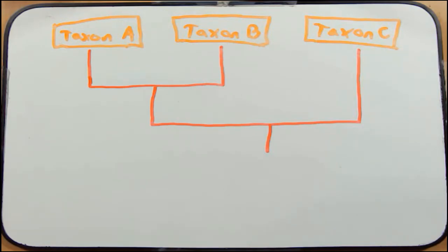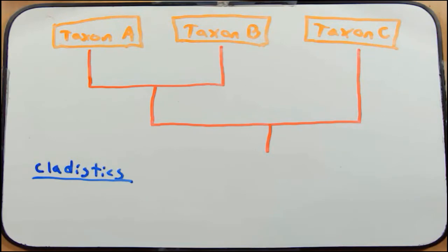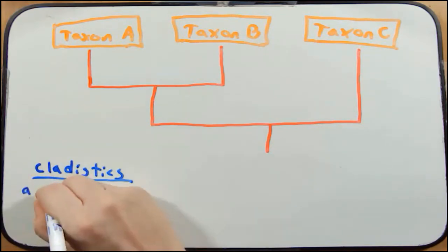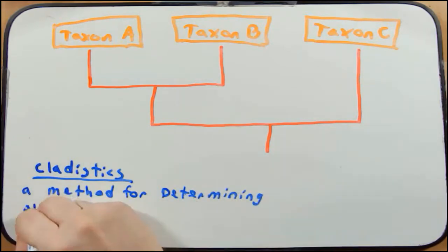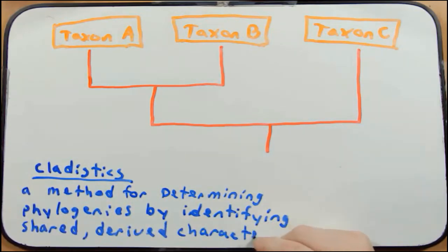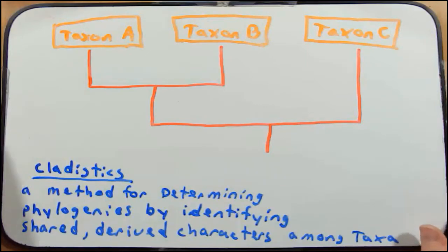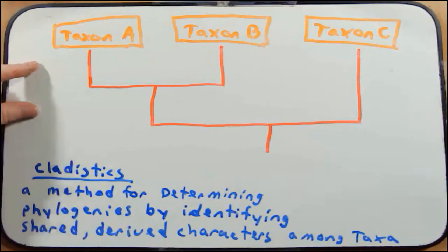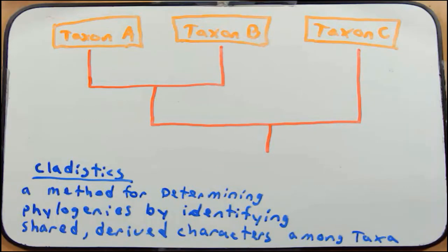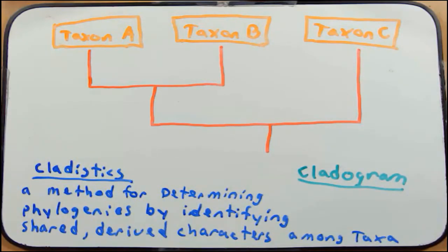This particular phylogenetic tree is based upon a term called cladistics. Cladistics is a method for determining phylogenies by identifying shared derived characters among taxa. For instance, taxon A and taxon B share certain characteristics different from taxon C. Because we're using cladistics, the name of this type of phylogenetic tree makes sense — it's called a cladogram. A cladogram is nothing more than a phylogenetic tree that is built using cladistics.